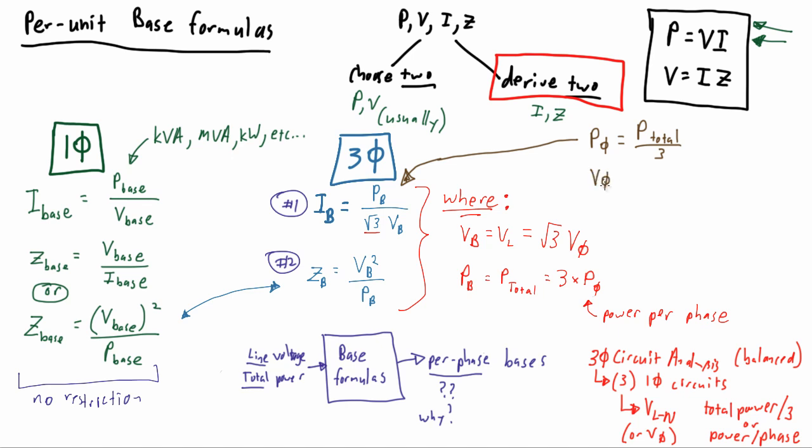Our phase voltage is our line voltage over root three. Remember, we're solving for current with this formula, so we're going to use our simple P equals VI algebra. Moving to our desired outputs, we add phase subscripts to demonstrate that we'll be getting phase values out.